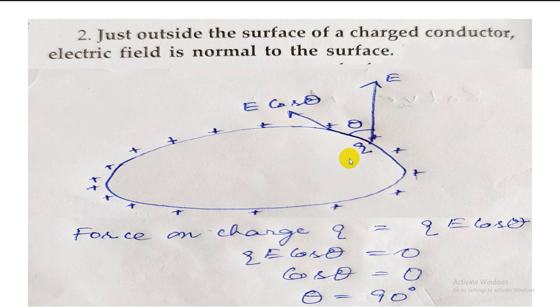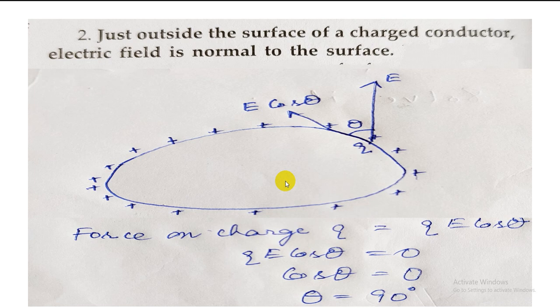We know that charges on the surface of a conductor do not move — if they moved, it would constitute a flow of charge giving rise to electric current. If we touch a charged conductor surface we might expect a shock, but we don't get one because the charges are at rest. That means the tangential force Q·E·cos theta must be zero. Since Q is not zero, cos theta must be zero, which means theta equals 90 degrees. Therefore, the electric field is perpendicular to the surface of the conductor.